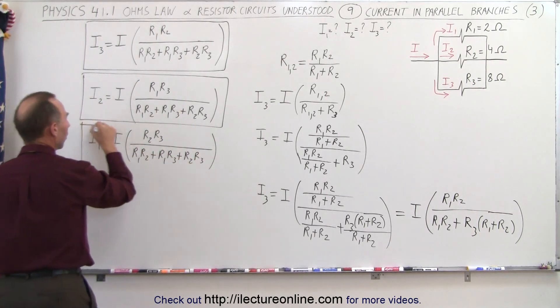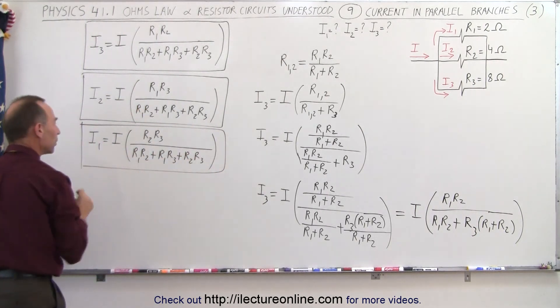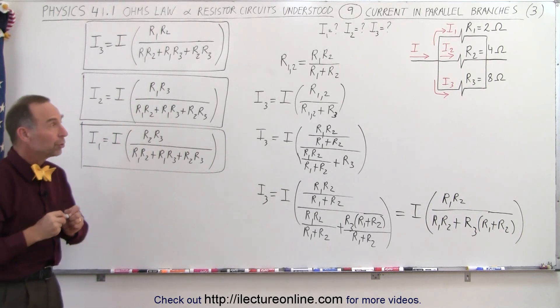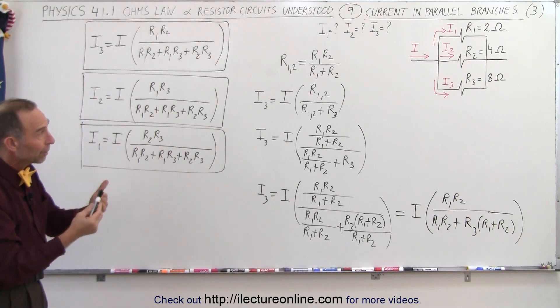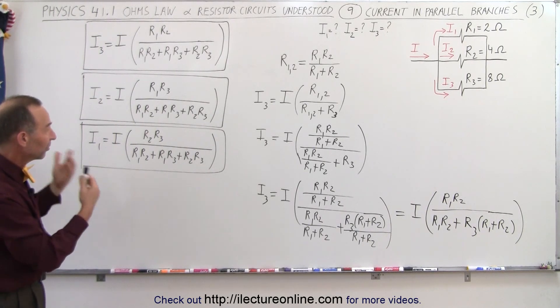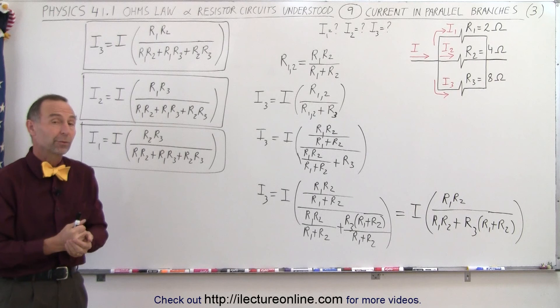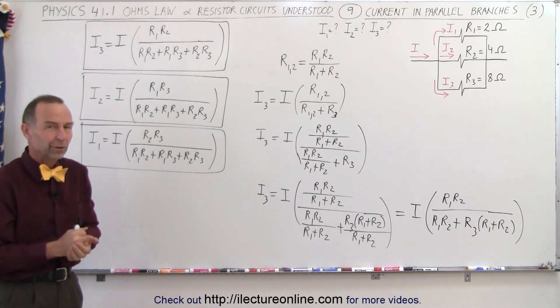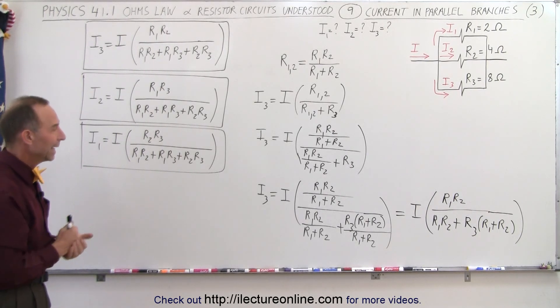And so there's an equation for all three of the currents. That's what we do when we find the current in each of the three branches. We can use these three equations. Once you see the pattern, it's fairly straightforward, and we'll show you how to apply this in the next video.